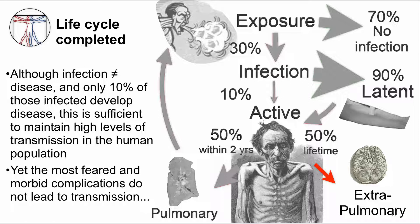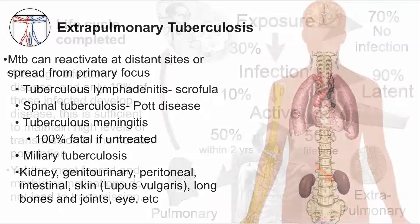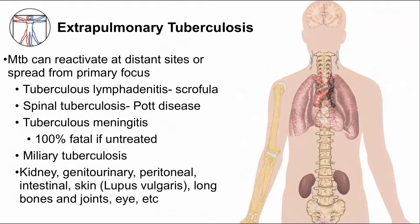Recall that during primary infection, macrophages and dendritic cells can carry MTB to distant sites. The same process of granuloma formation, latency, and then progression to TB disease can occur at these distant sites. Virtually any organ can be affected. I'm going to highlight some of the more common clinical manifestations of extra-pulmonary disease.